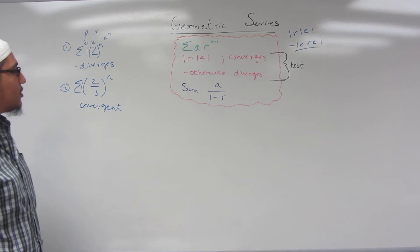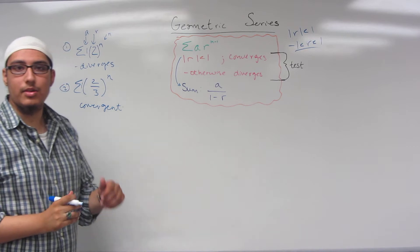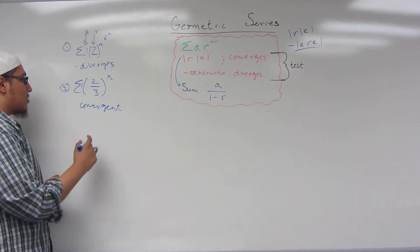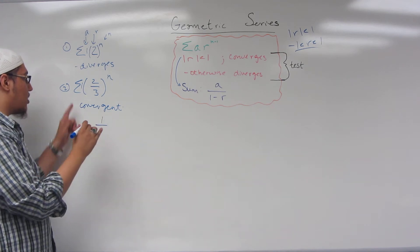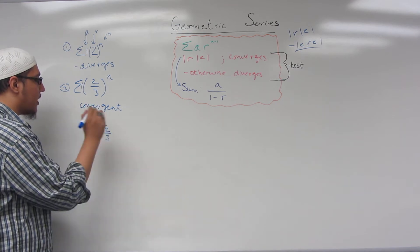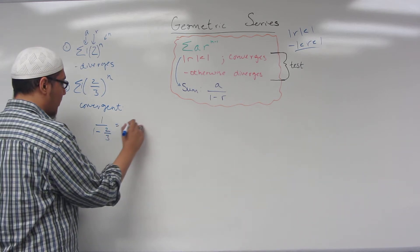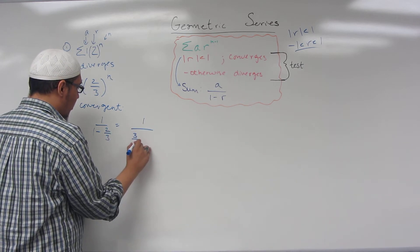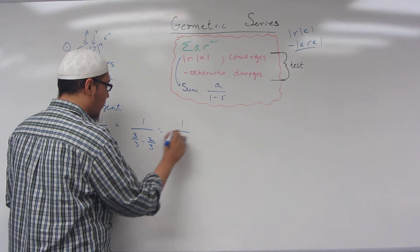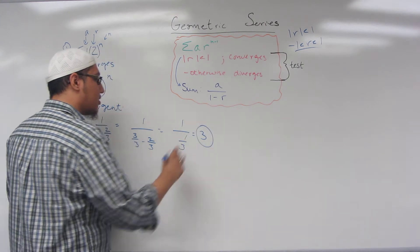Now, if we have a convergent geometric series, we can find the sum. The sum would essentially be equal to A, which is 1, over 1 minus R, which is 2 thirds. When you simplify: 1 over 3 thirds minus 2 thirds equals 1 over 1 third, which comes out to be equal to 3. This is the sum of the geometric series.